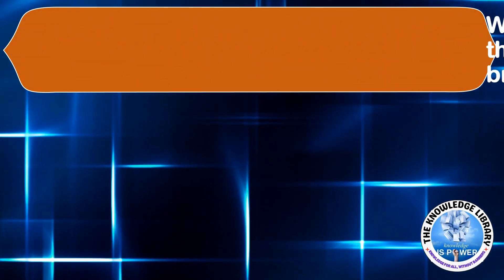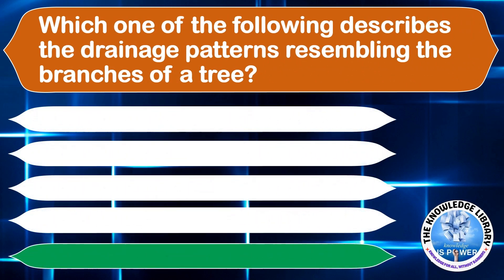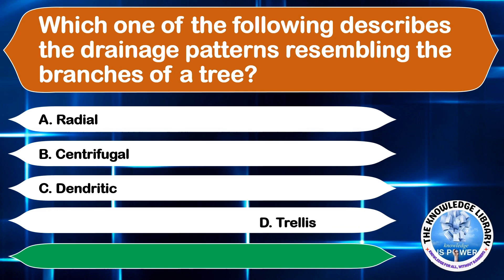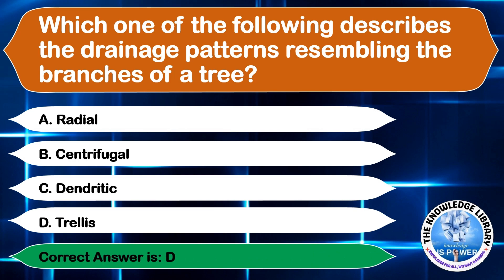Which of the following describes the drainage pattern resembling the branches of a tree? A. Radial, B. Centrifugal, C. Dendritic, or D. Trellis. The correct answer is option C, Dendritic.